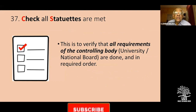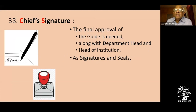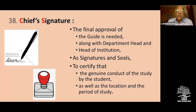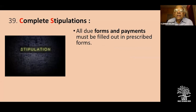Check all statutes are met — your controlling body says they want it in a particular format, and all these things must be done properly. The National Board is pretty strict on all statutes being maintained. You have to go to the chief for signatures — this is the final approval. Go to the department, the guide, and the head of institution to get signatures and seals, which certify that this is genuine conduct by the student at the stated place and location of the study.